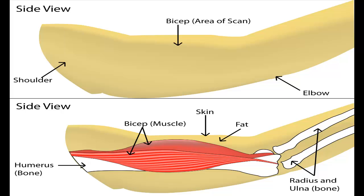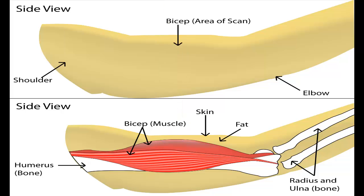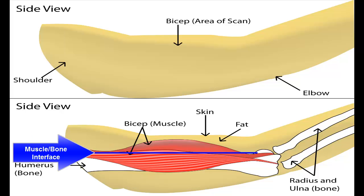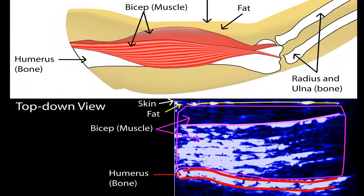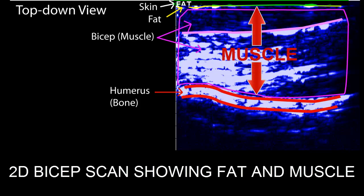Let's examine this side view illustration of the arm and explain the principle behind ultrasound and how it works. Ultrasound waves travel through tissue and strong reflections of signal occur at different boundaries or interfaces — for example, the fat-muscle interface and muscle-bone interface. In this cross-sectional ultrasound scan of a bicep, these same interfaces appear as white bands of high-signal ultrasound and allow us to visualize both fat and muscle thickness.